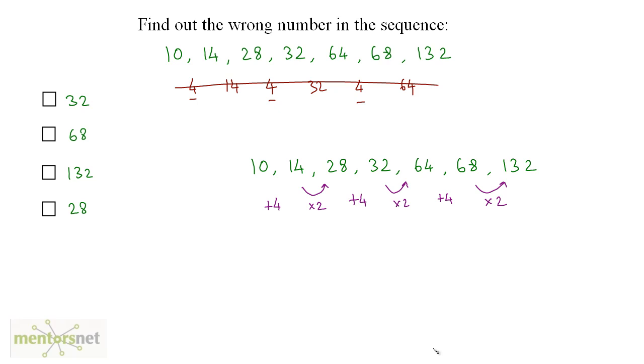Well, 68 times 2 gives you 136. Now, we've got what is wrong in our sequence. This is basically a trial and error method. So in the second drive, we've got our culprit. And that is 132, which is the wrong number in the sequence.